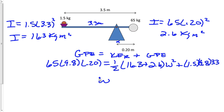And then solving for omega, we do get 2.89 radians per second.